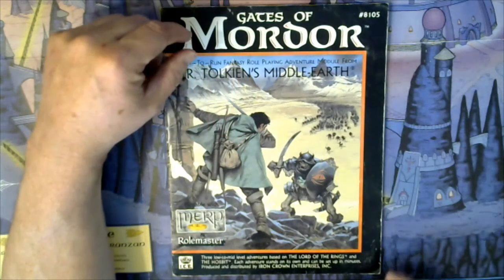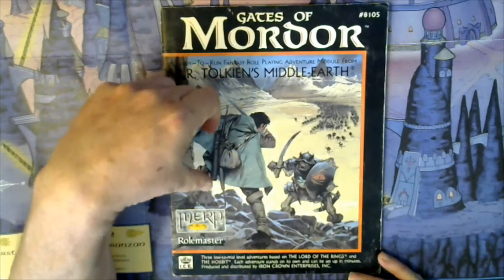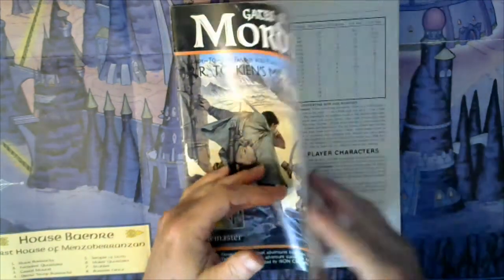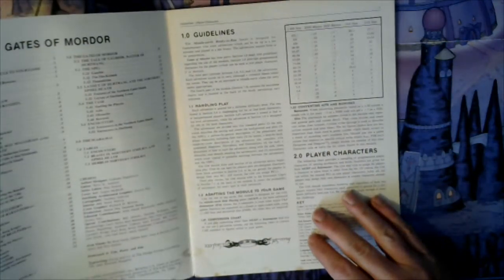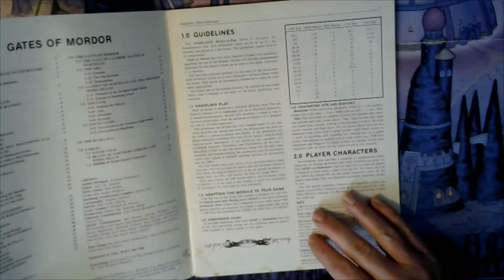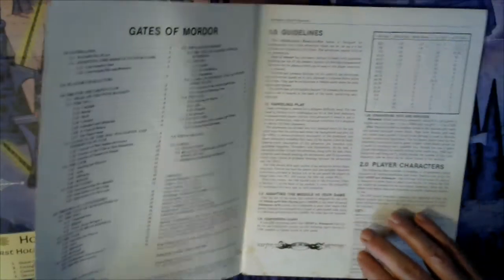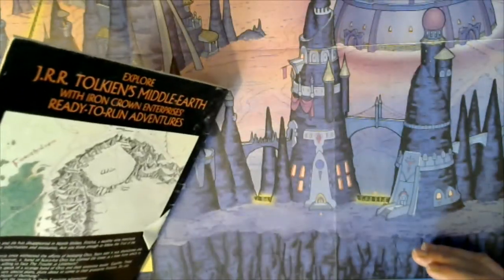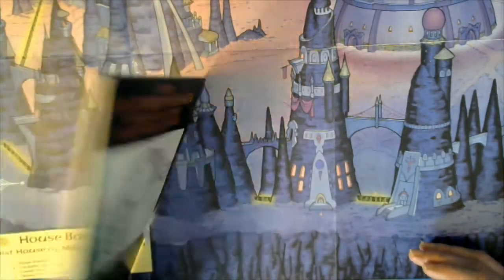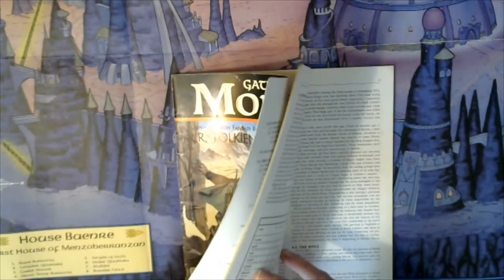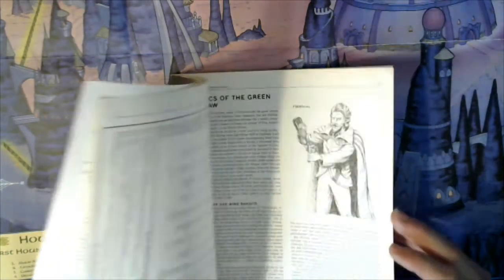This is Gates of Mordor for Middle Earth role-playing game, a ready-to-run fantasy role-playing adventure. It was published first edition May 1987. I don't have a price tag on it, but I think it was about $8 because a lot of these were in that realm back in the 80s.